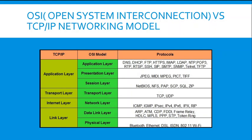On the transport layer in both TCP/IP and OSI models, we have TCP and UDP — Transmission Control Protocol and User Datagram Protocol. We will discuss the differences between them later. On the internet layer and network layer, we have ICMP, IGMP, IPsec, IPv4, IPv6, IPX, and RIP protocols.